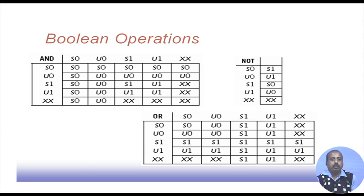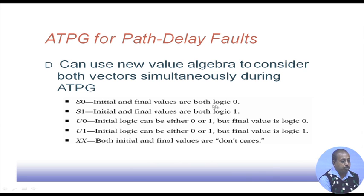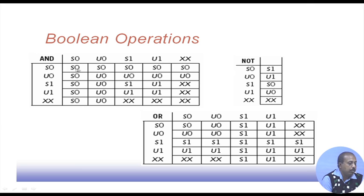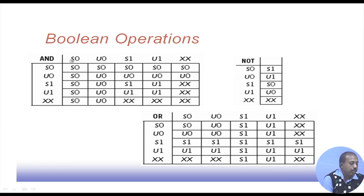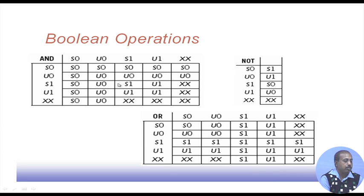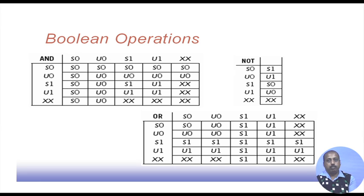We can define Boolean operations over this algebra. For AND operations: S0 ANDed with anything remains S0 since both values are fixed at logic 0. U0 ANDed with a steady-0 gives S0. The AND and OR operations can be computed by taking individual vectors separately and determining the output of AND or NOT operations.